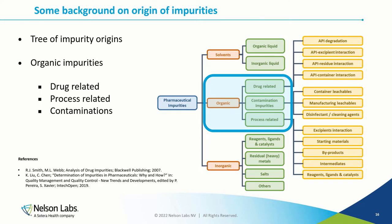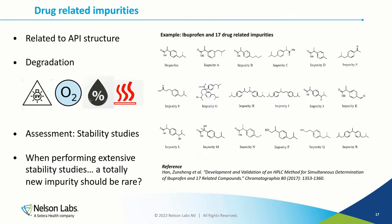In the next couple of slides, we will discuss each category in more detail. First, we have the drug-related impurities, which are related to the API. These impurities evolve during long-term storage of the drug product because of chemical reactions of the API involving temperature, oxidation, humidity, or light, or a combination of such factors.